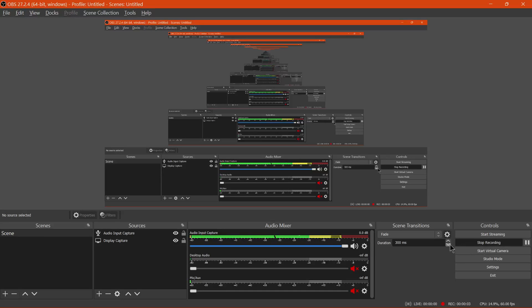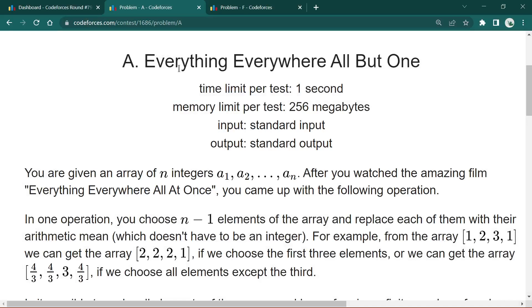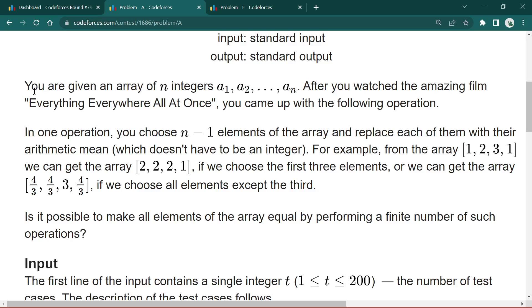Today we will talk about Codeforces Round 794 Div 2 Problem M, which is called Everything Everywhere All At Once. The time limit is one second, memory limit is 256 megabytes. The statement says you are given an array of integers from a1 to an. After you watch the amazing film Everything Everywhere All At Once, you came up with the following operation.